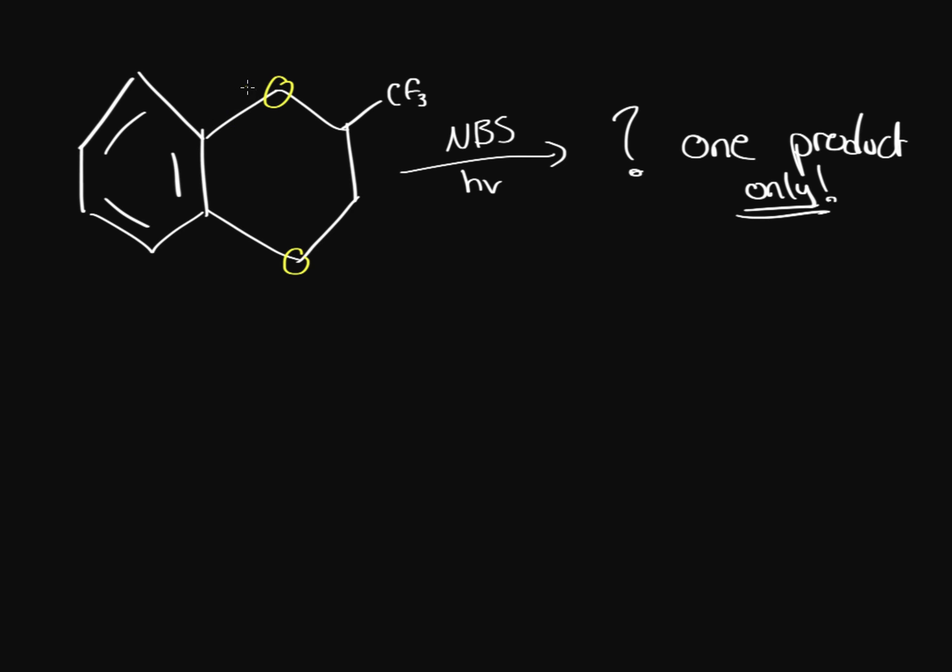But what's special about them is that they're allylic because they're next to a carbon with a double bond. So we're going to stick to those, those are the most stable ones that we have—they're secondary allylic.